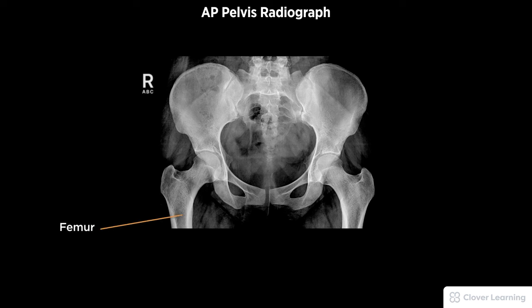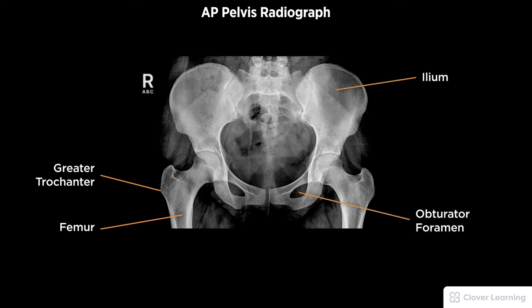Both greater trochanters should be equidistant, with symmetric ileum, obturator foramina, and ischial spines. The greater trochanters in profile with proper visualization of soft tissue and bony detail.